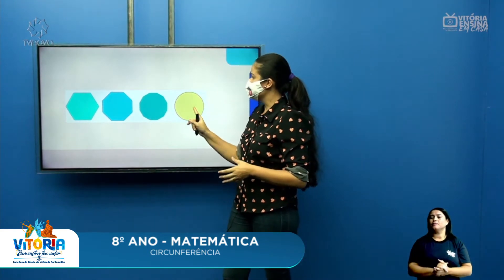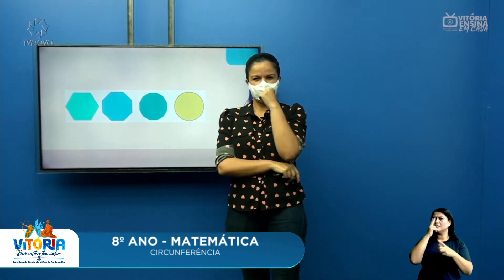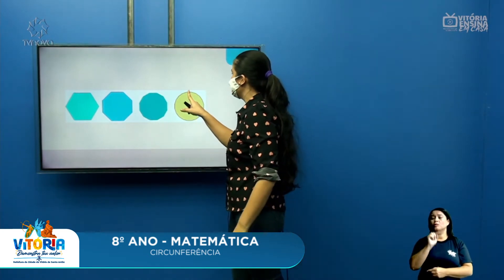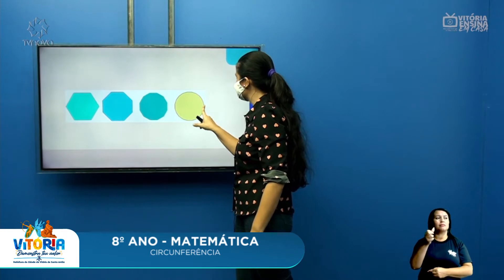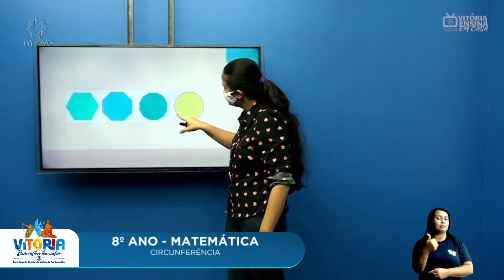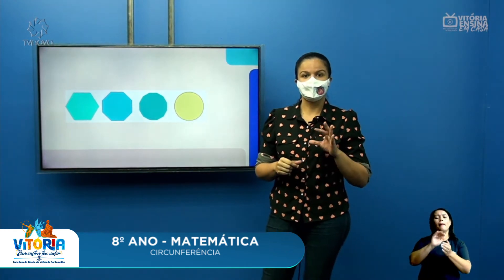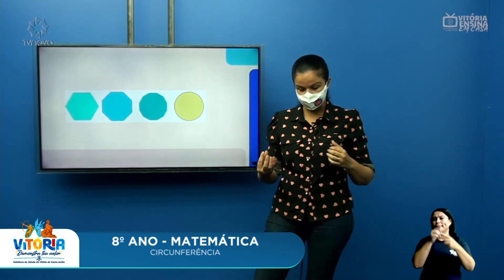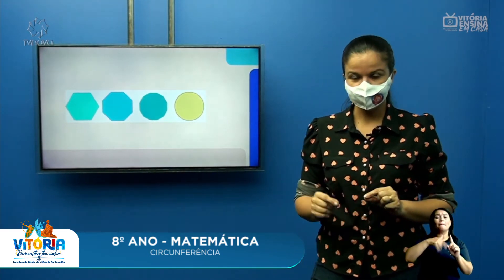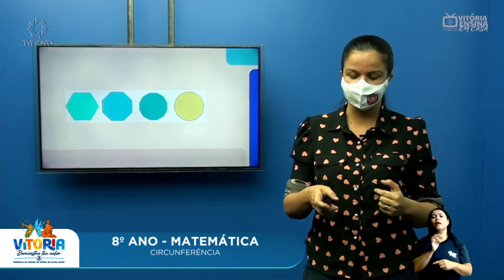A figura geométrica, quanto mais lados ela tiver, mais ela vai aparecer como um círculo, com uma circunferência. Na matemática, um círculo, ou disco circular, é o conjunto dos pontos internos de uma circunferência. A circunferência é essa linha aqui, que eu deixei na cor vermelha, destacando bem para vocês.